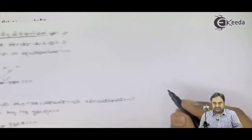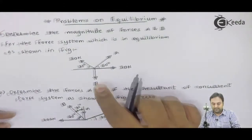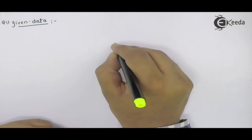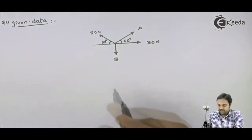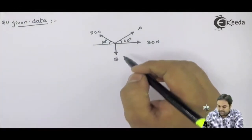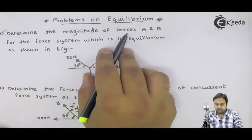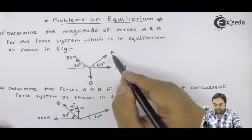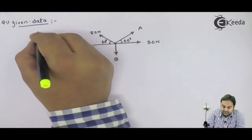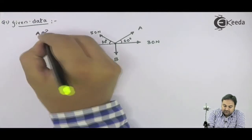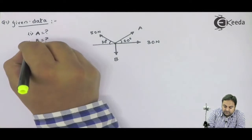For this question we will write the data first. Here the diagram is given, so I will draw this diagram again. This is the diagram which is given. Here we have a concurrent force system and it is said in the question determine the magnitude of forces capital A and B. We have to find the value of these two unknown forces. So what is the value of A? That's my question. And what is the value of B? These are my questions 1 and 2.